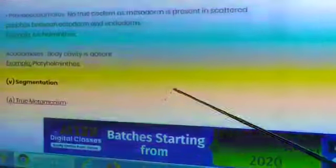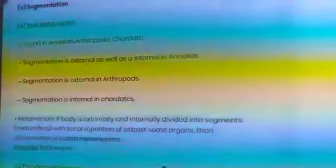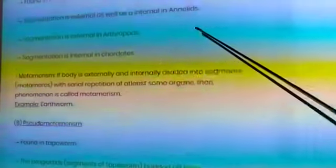Today we will study about segmentation. There are two types of segmentation: true metamerism and pseudometamerism. True metamerism found in annelida, arthropoda, chordata.